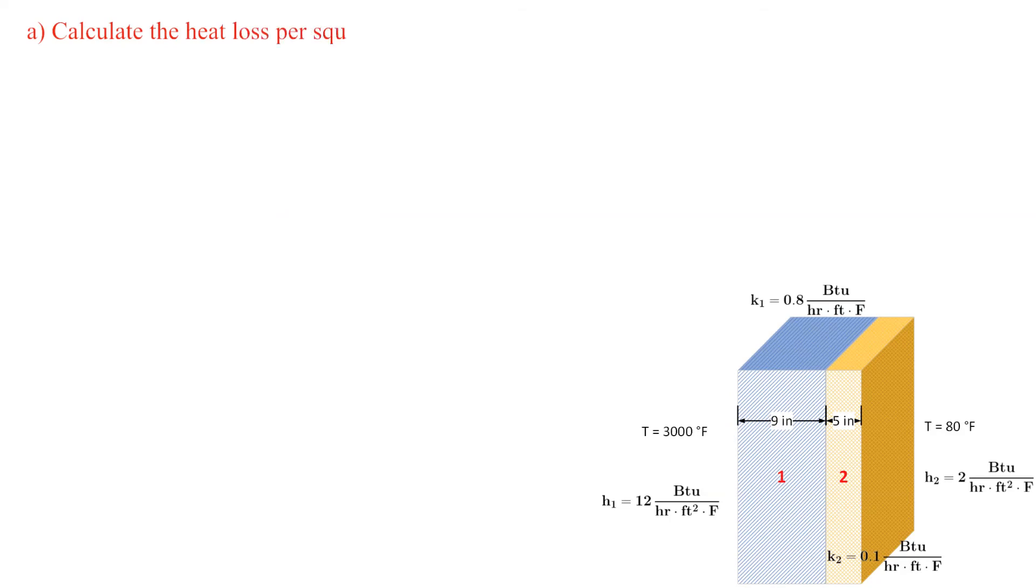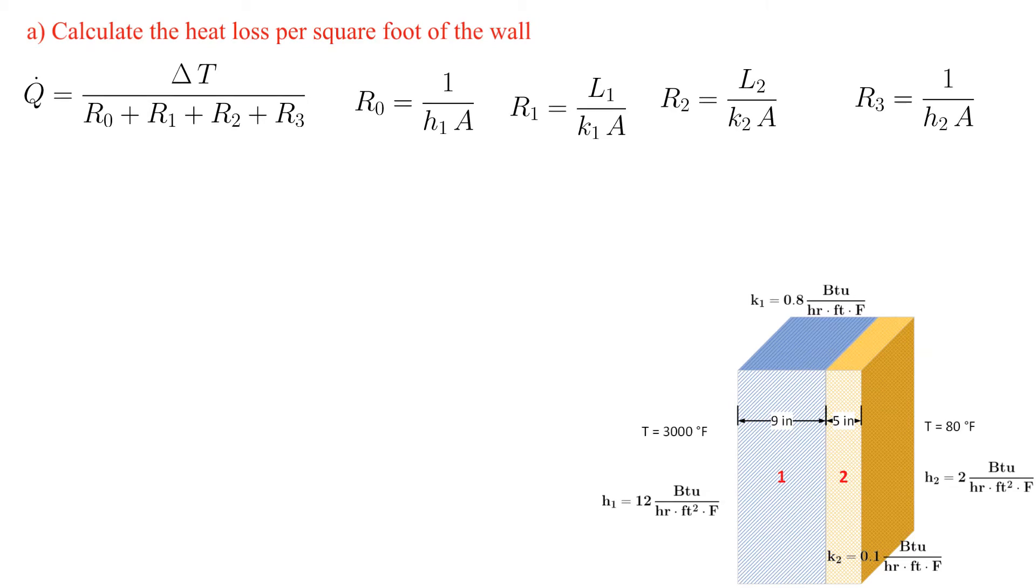Let's solve for the heat loss per square foot of the wall, which is also the heat flux. The necessary equations are repeated. You will notice that each of the resistance terms has the heat transfer area in the denominator. This is factored out and moved to the left hand side of the equation, which gives us the equation for the specified unknown.